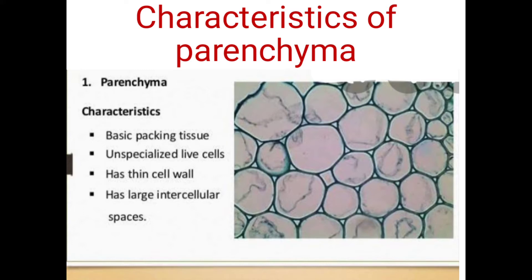Basically, parenchyma cells have basic packing tissues and they are the most unspecialized living cells. They are living cells that have a thin cell wall and they have large intercellular spaces in which no depositions are seen. The cell wall consists only of cellulose and there is a prominent nucleus, cytoplasm and vacuoles.